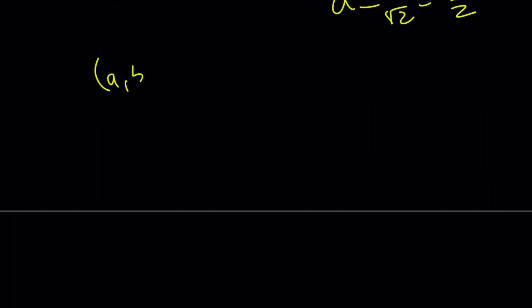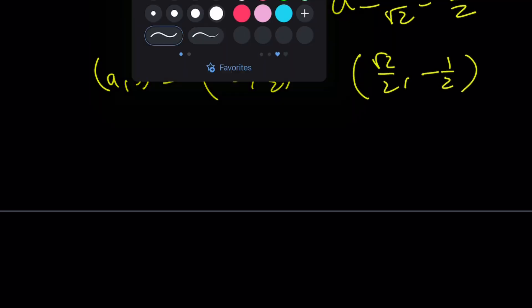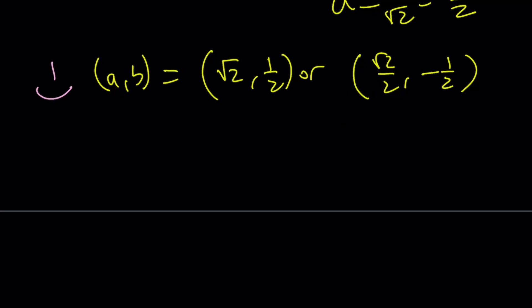We can write (a, b) as (square root of 2, 1 half) or (square root of 2 over 2, negative 1 half). And this brings us to the end of this video. Thank you for watching. I hope you enjoyed it. Please let me know. Don't forget to comment, like, and subscribe. I'll see you tomorrow with another video. Until then, be safe, take care, and bye-bye.